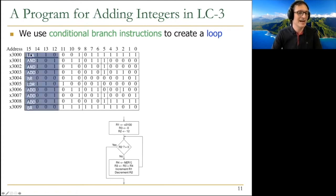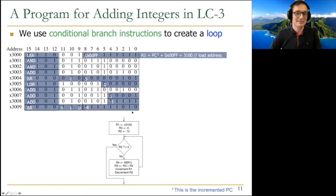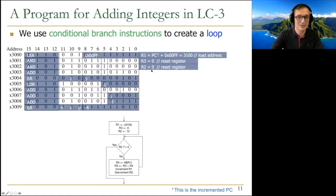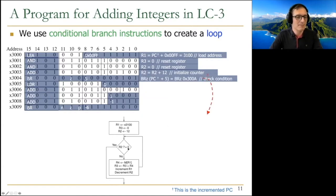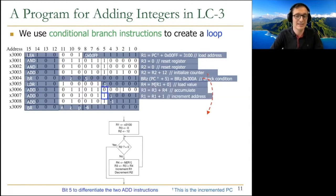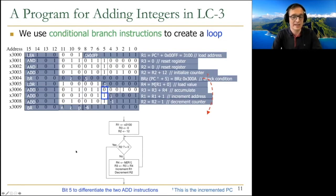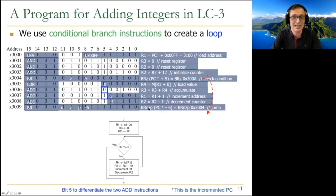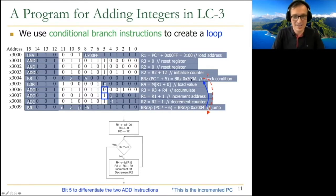There's a load effective address that loads a value into 3100. We reset registers R3 and R2, then initialize the counter R2. We check the condition and jump out if it's true. If not, we execute the block: load the value from integers, accumulate it, and increment the address. Different forms of add are used — register add and add immediate. We decrement the integer counter, increment the address for the next iteration, and unconditionally branch — NZP is an unconditional branch — back to check the condition.